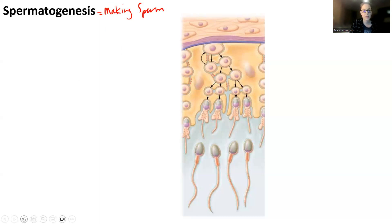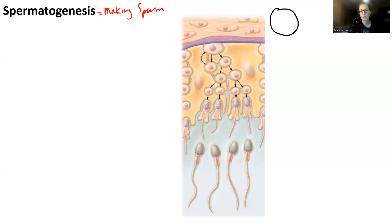I didn't cover the anatomy of the seminiferous tubule, but I'm going to do that while I create a chart of spermatogenesis. So this is a cross-section of the seminiferous tubule. It has an outer part with cells on the outside portion, and the inside portion is a lumen, which means an opening.